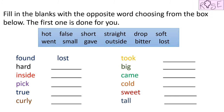Now let us come to the activity taken from your book. The question says: fill in the blanks with the opposite word, choosing from the box below. The first one is done for you. We have to select the opposite words from this box. The opposite of found is lost.